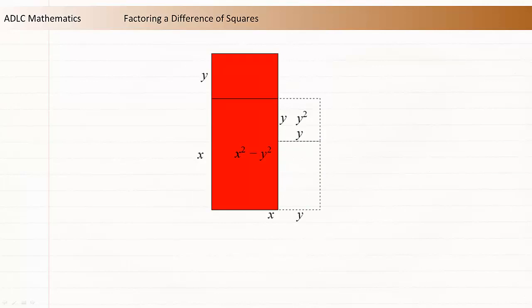One side of the rectangle is y larger than x, and the other side of the rectangle is y smaller than x. So the dimensions of the rectangle are x plus y and x minus y. From this we can conclude that x squared minus y squared is equal to x plus y times x minus y.